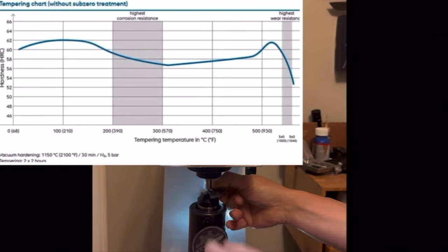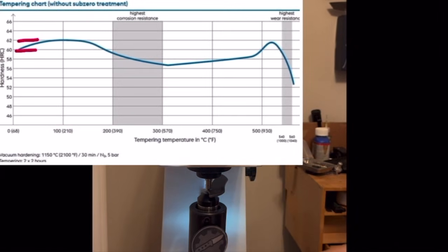First one, showing heat treatment without the cryogenics. In this regime, M390 can only reach the range between 60 and 62 HRC. Pause the video and take a look at the chart.